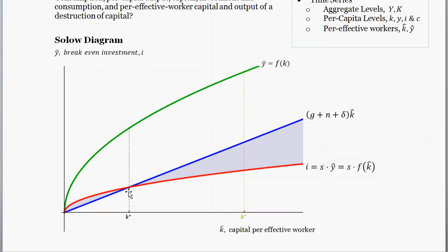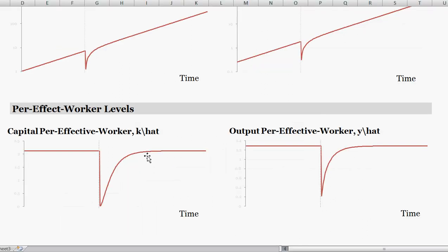When capital per effective worker is very close to the steady state, investment is only just above the breakeven investment line, so the addition to capital per effective worker is very small. The growth rate of capital per effective worker near the steady state is therefore very, very small. Output per effective worker is just a function of capital per effective worker, so it follows an identical convergence path — just with slightly different values.